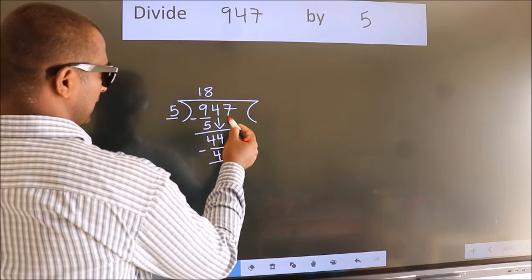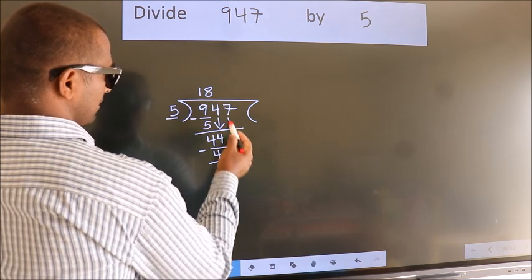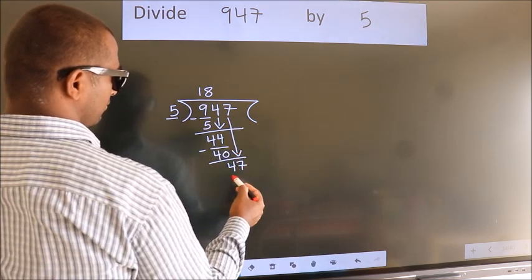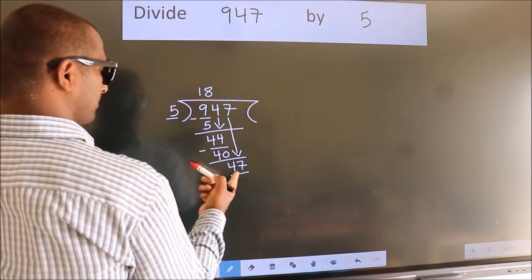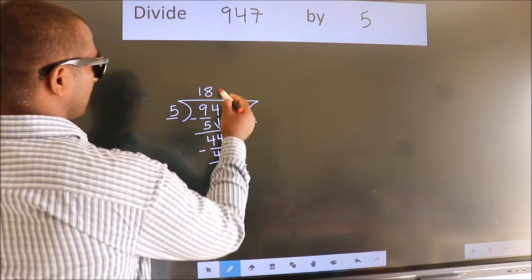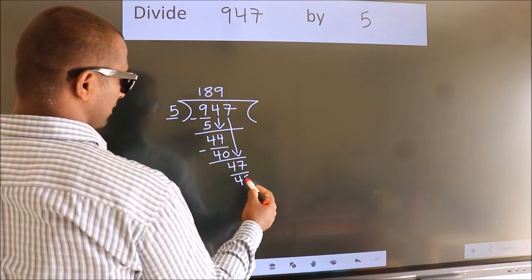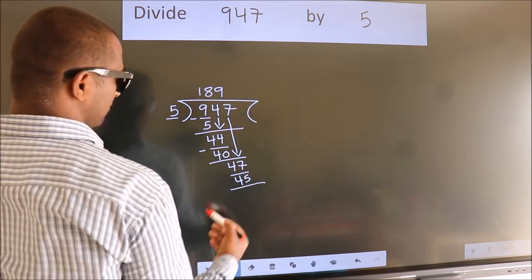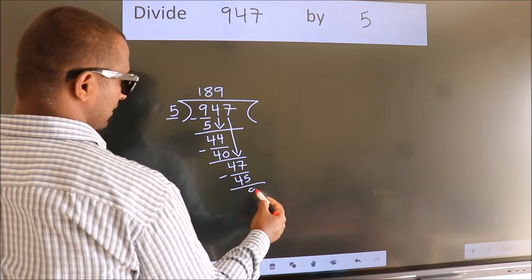After this, bring down the beside number. So 7 down. So 47. A number close to 47 in 5 table is 5 9s 45. Now we subtract. We get 2.